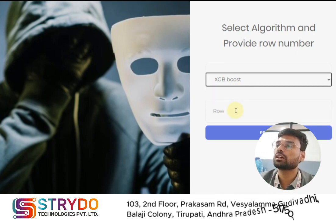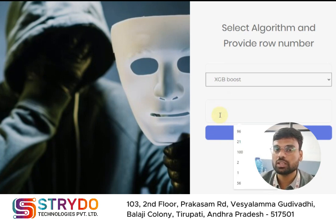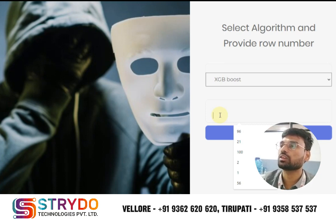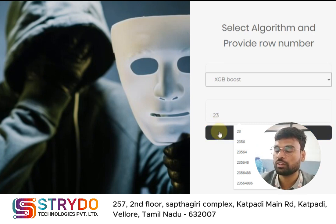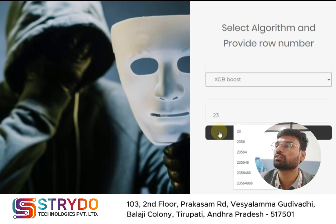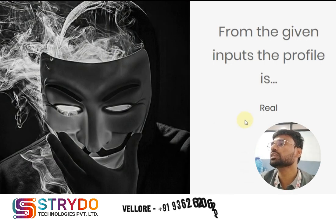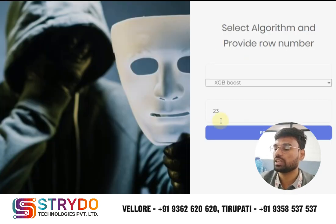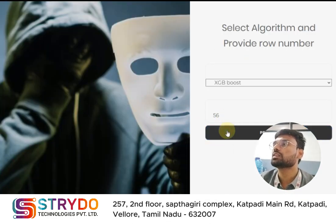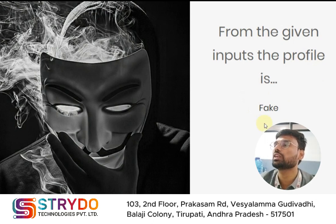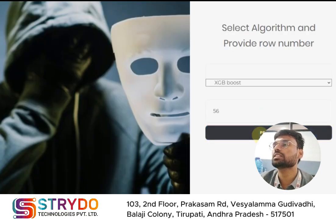After clicking on an algorithm, it asks for a row number. In a separate Excel sheet, all data is saved, and the row number refers to the row in that sheet. For example, if I enter row number 23, the details from that row — like whether a profile picture is present or not — are automatically loaded. After clicking the predict button, it shows the result. For row 23, it shows the profile is real. For row 56, after clicking predict, it shows the profile is fake.